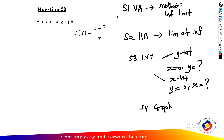Step one: find the vertical asymptote of the rational function using the infinite limit — find the limit from the left and from the right. Step two: find the horizontal asymptote using limits at infinity — find the limit as x approaches positive infinity and negative infinity of f(x). Step three: find the intercepts — the y-intercept when x equals zero, and the x-intercept when y equals zero. Step four: sketch the graph of the rational function.